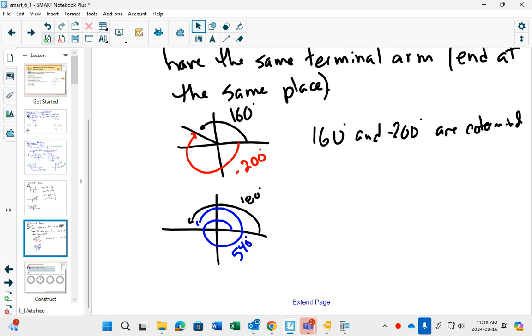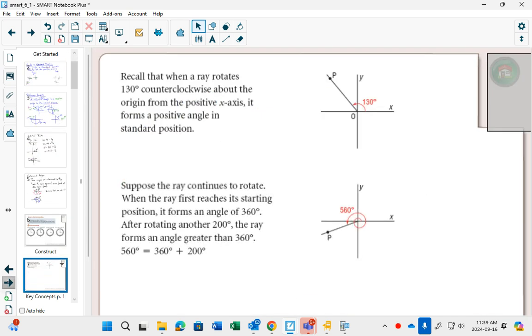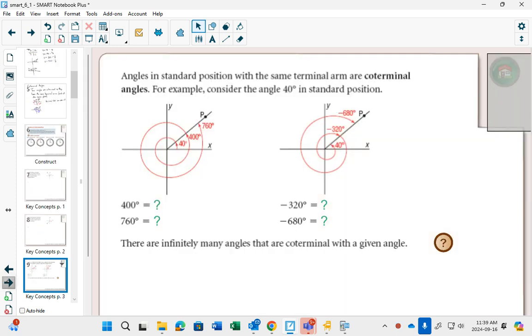But these are coterminal angles, angles that end in the same place. So, I mean, in your notes, you could also, they've got the definition, let's see if I can find it on yours. There it is. So on page 468, right in the middle of the page, we wrote our definition as well, but you can highlight it here. Angles in standard position with the same terminal arm are coterminal angles. And there's lots of them. Like here's 40, is also coterminal with 400. Also coterminal with 760. Also coterminal with negative 320. Also coterminal with 680. So, does it make sense that there are an infinite amount of coterminal angles with something?